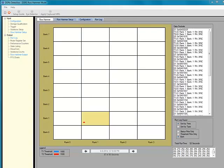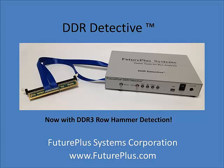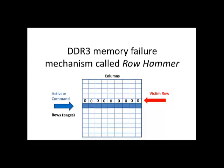That's it for our quick overview of the Row Hammer detection feature of the DDR Detective. This feature is now included in all DDR Detective shipments. To summarize: if a row of memory cells becomes hammered — meaning they are repeatedly subjected to the memory controller's activate command — they can leak charge into physically adjacent cells, causing those cells to be corrupted. So if you are having trouble trying to track down some of those unexplained memory errors in your data center or on your memory project, give us a call. We can help! For more information on this product and other great memory tools, visit our website at www.futureplus.com. We'll see you next time in the lab.